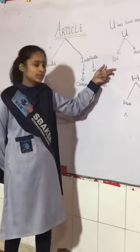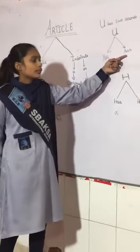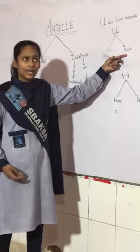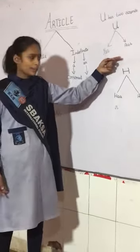For example: 'a university', 'a universe', 'a unicorn' — because U gives the 'yoo' sound. But 'an umbrella', 'an upstairs' — because U gives the 'uh' sound.